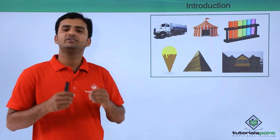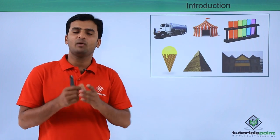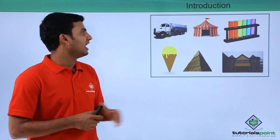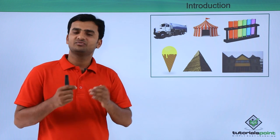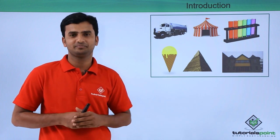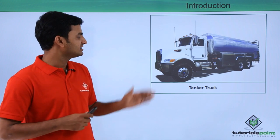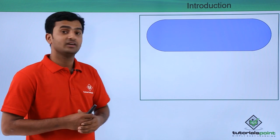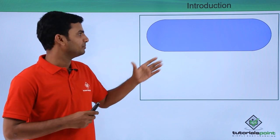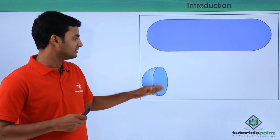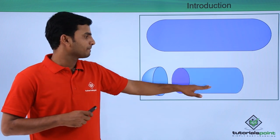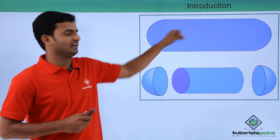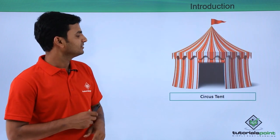In this world we have different objects and there are some objects which are combinations of basic three-dimensional shapes. Here I have collected a few objects. Let's find out what kind of shapes are hidden in them. We'll begin with this tanker truck. If you observe this tank, it is in this shape. If you divide this tank into different parts, you'll get one hemisphere, one cylinder, and again another hemisphere. If you combine them again it looks like a tank.